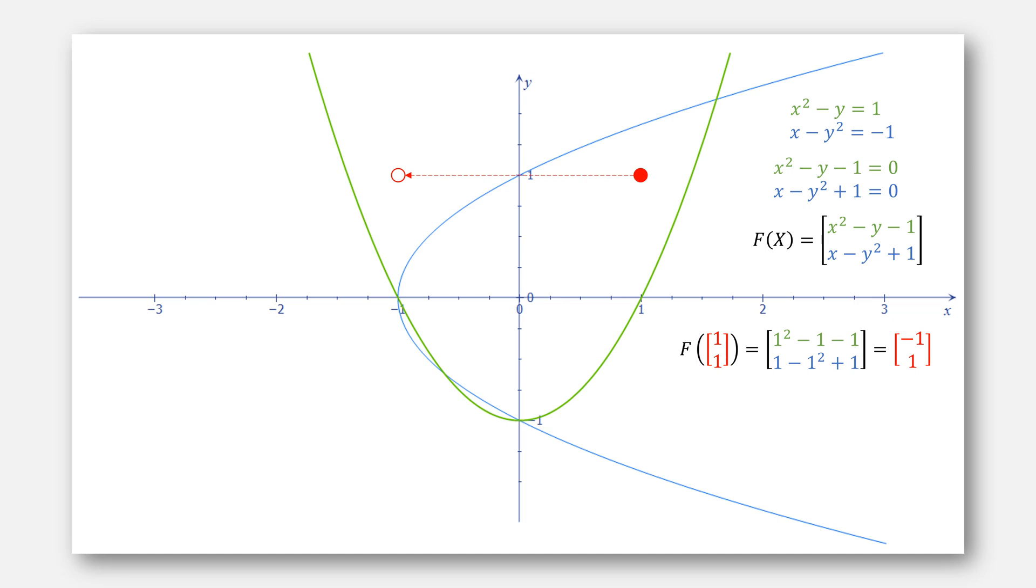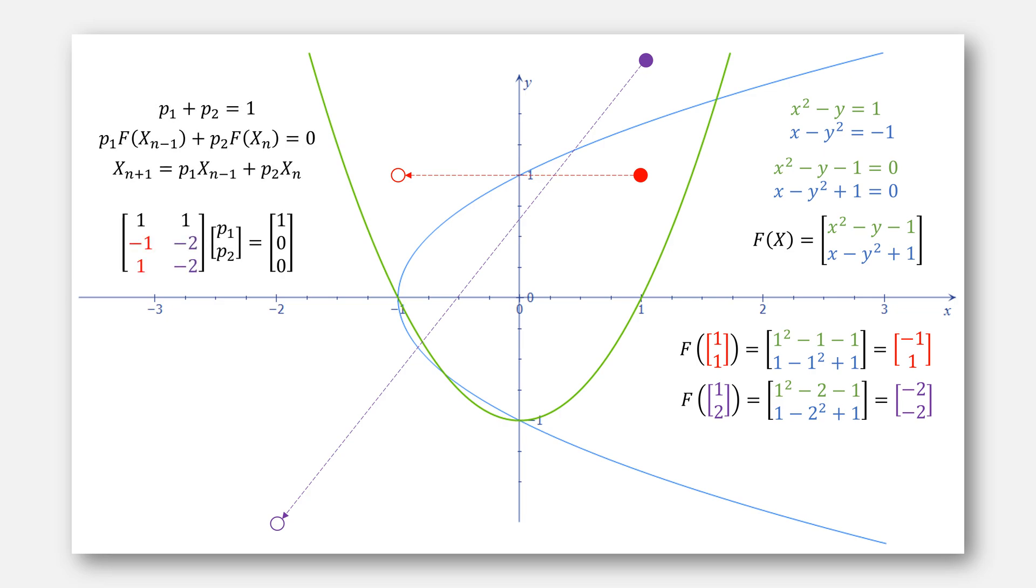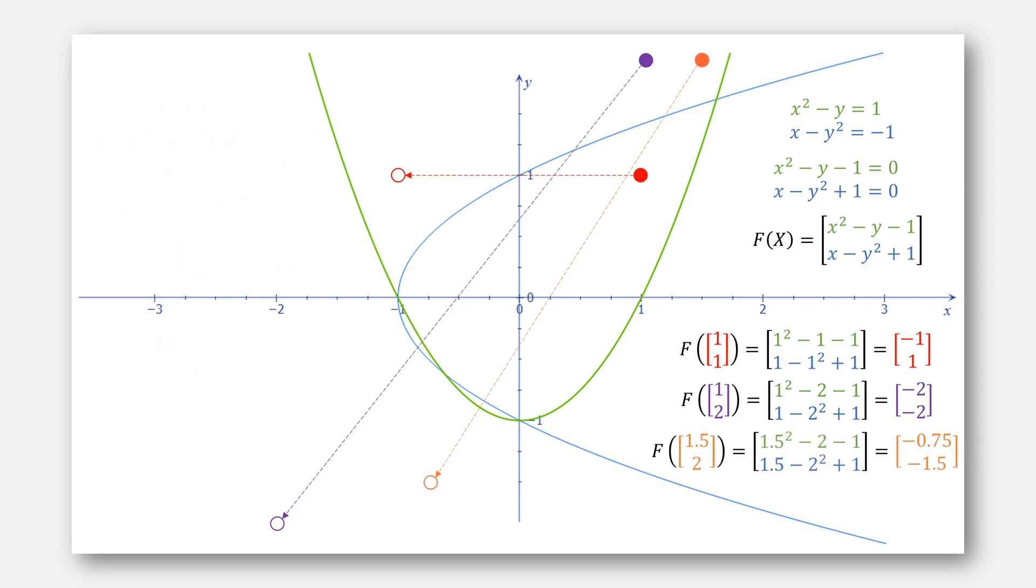And because this is a secant method, we're going to need another point, for example 1, 2. Plug this into our linear system. And this doesn't work. That's because for d dimensions, we're going to need d plus 1 points. Let's take a third point at the value 1.5, 2.